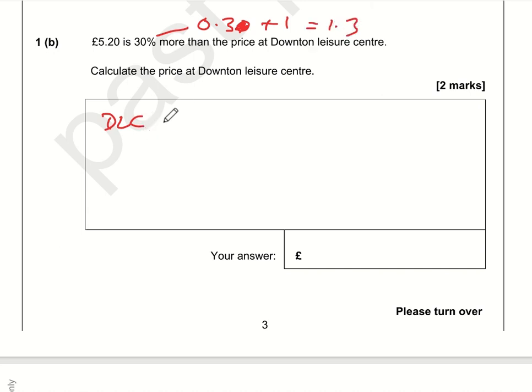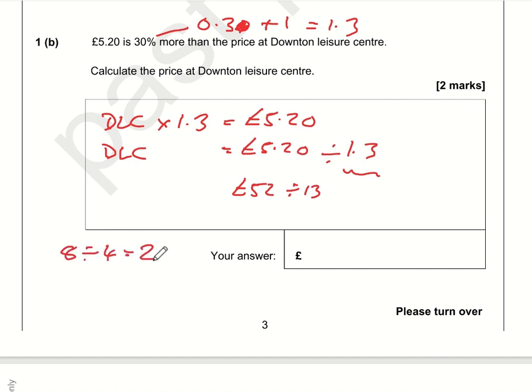The Downton Leisure Centre price has been multiplied by 1.3 to give us this new value of £5.20. So therefore the Downton Leisure Centre price is going to be £5.20 divided by 1.3. We don't really want to divide by a decimal. 5.20 divided by 1.3 is the same as 52 divided by 13. The answer is still two—you've got ten times as much stuff shared amongst ten times as many people.